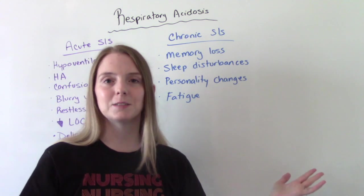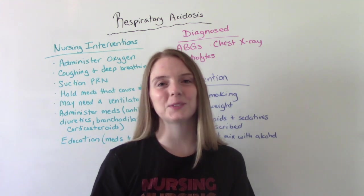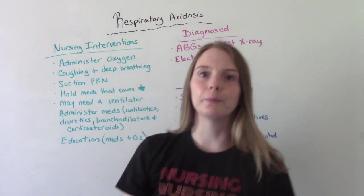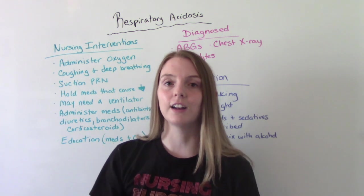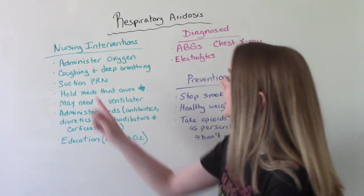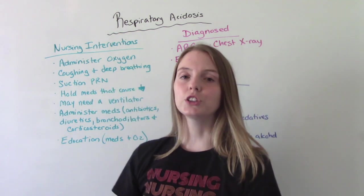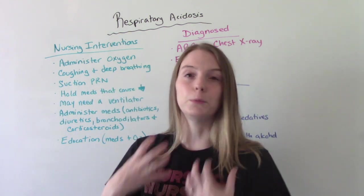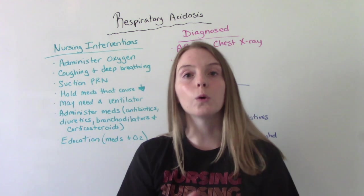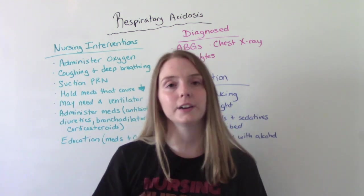So what can we do to help these patients? Some nursing interventions for respiratory acidosis include administering oxygen — their body is not getting enough oxygen and is retaining too much CO2, so giving them oxygen could help. Encourage coughing and deep breathing. Suction as needed, especially if the cause is an airway obstruction like mucus. Hold the medications that can cause respiratory depression — our opioids and sedatives — while the patient is acidotic, and give them later when it's safer.